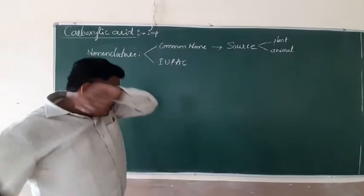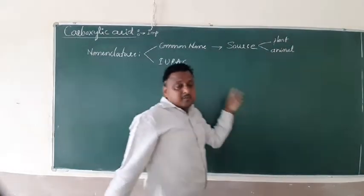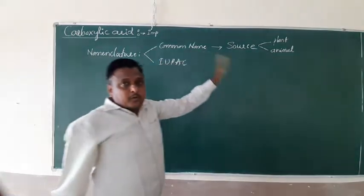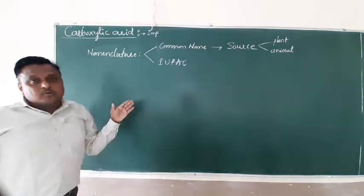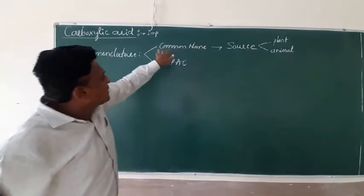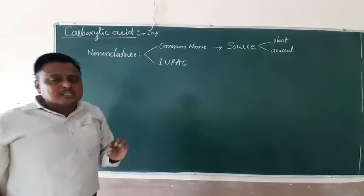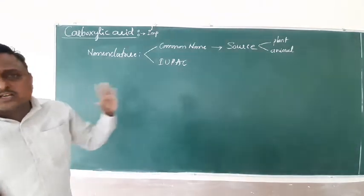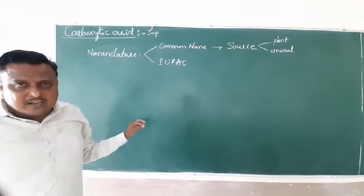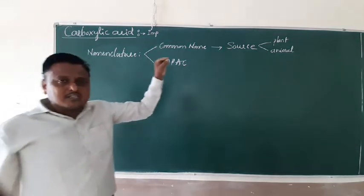So already we know this animal is a red ant, this is formica, that is why we call it formic acid. And acetum or vinegar, we call it acetic acid. Caproic acid is coming from the goats. Similarly, based on the source, we can mention their common names.